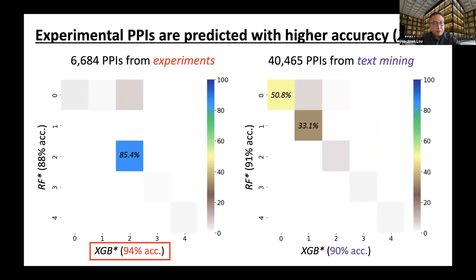One control experiment we performed is to compare prediction of experimental PPIs with prediction of text-mining PPIs in the VirusSTRING data. Although there is a 6-to-4 data size difference, XGBoost in fact shows higher accuracy at 94% compared to 90% accuracy for the text-mining case. So despite the data size difference, XGBoost shows good prediction performance. We also examined the agreement between random forest and XGBoost: for EC3 and text-mining predictions, as expected, results show mostly EC1 or EC2.